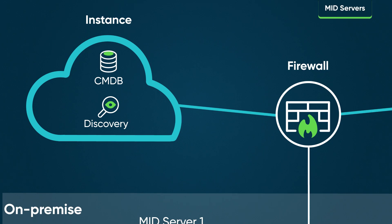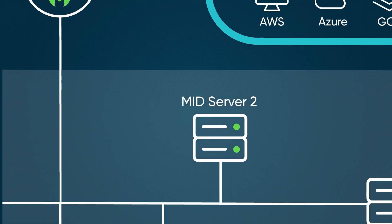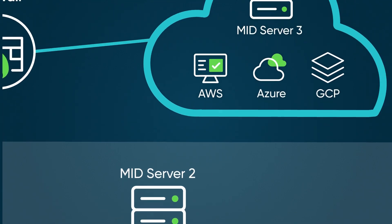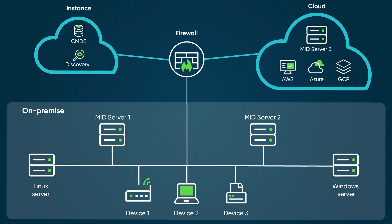Here's how it works. Discovery establishes connectivity to the infrastructure via a MID server. A MID server is a lightweight Java process that runs on either a Linux or Windows server, and MID servers can run on-premise or in the public cloud. The MID server's job during discovery is to gather information about devices and applications, and then return the results back to the instance for processing.